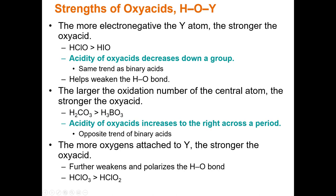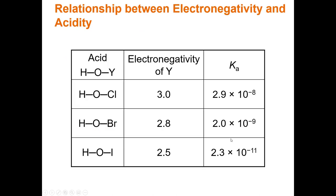The more oxygens that are attached to that atom, the stronger the acid. HClO₃ is a stronger acid than HClO₂, which is a stronger acid than HClO. As the electronegativity of the central atom decreases, acidity also decreases. HOI, because I has an electronegativity of 2.5, is the weakest acid, while HOCl has the highest electronegativity and is the strongest oxy acid with the largest Ka. But notice that all of these are still very weak acids — Ka values around 10⁻⁸ to 10⁻¹¹ are very small numbers, meaning very small Ka's.